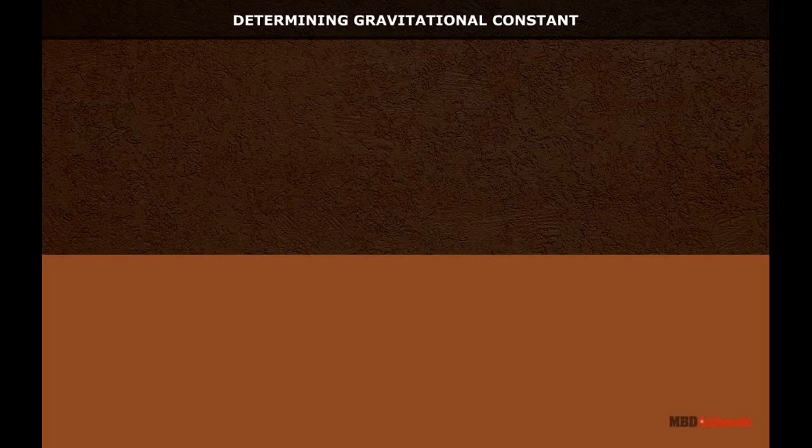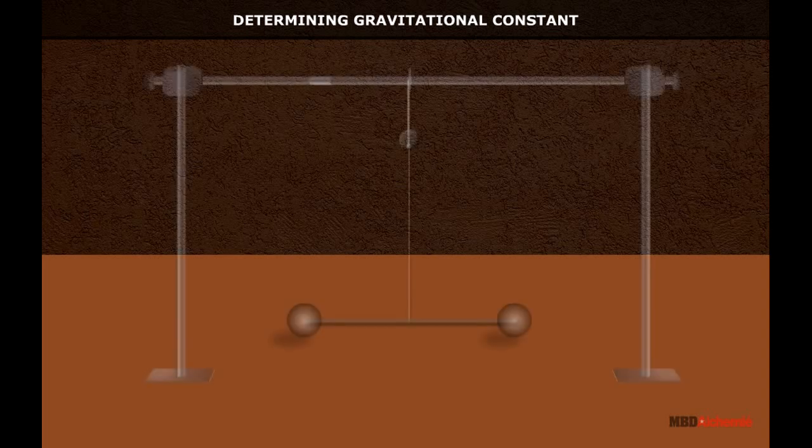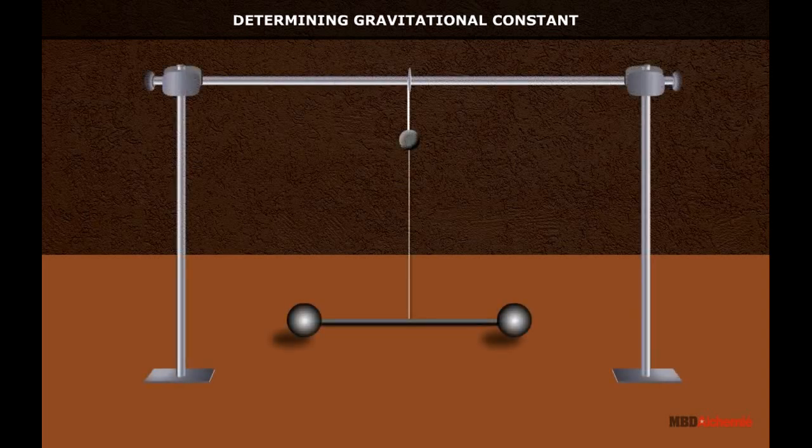Determining Gravitational Constant. English scientist Henry Cavendish in 1798 was the first one who experimentally determined the value of universal gravitational constant G.